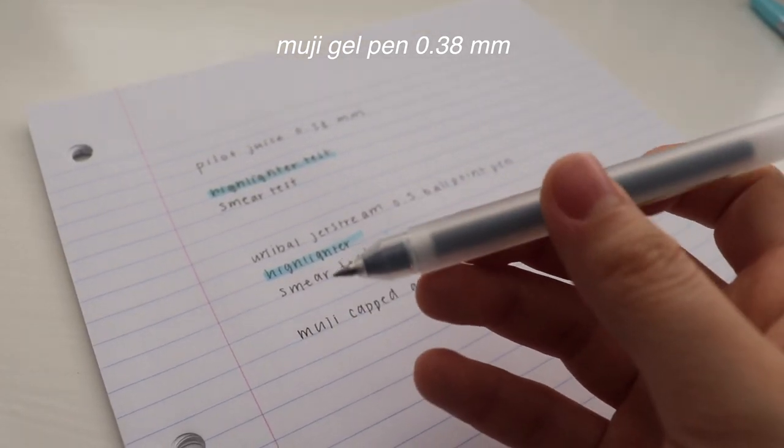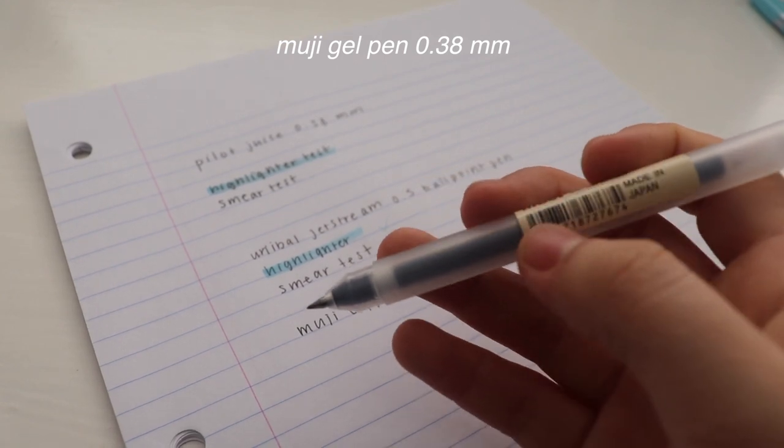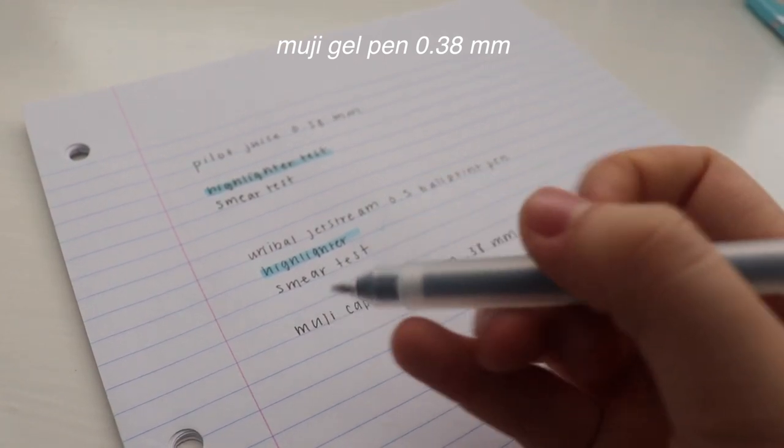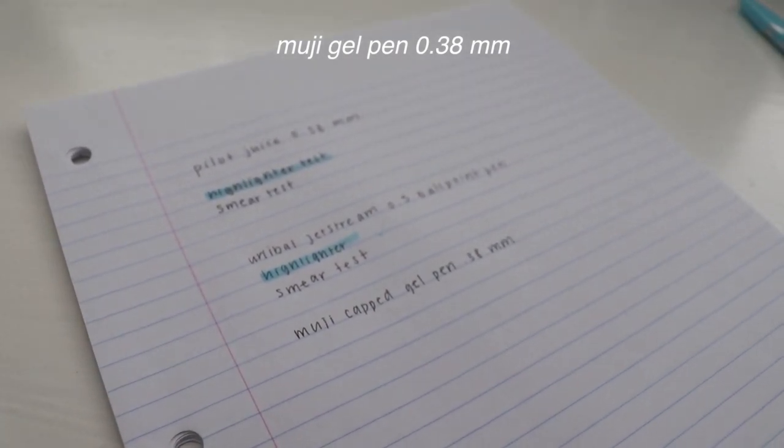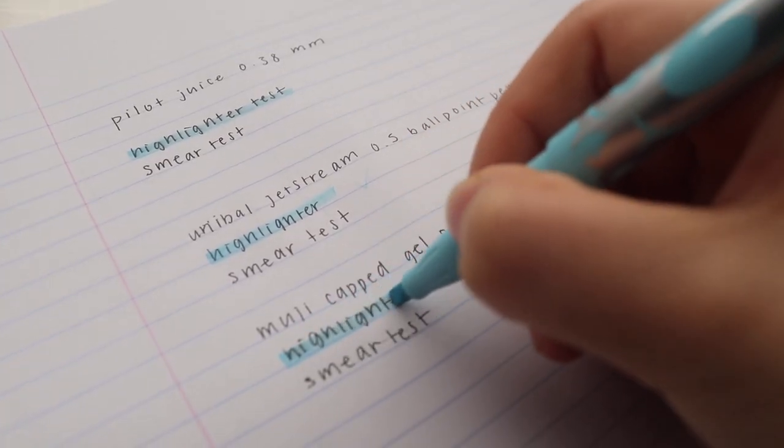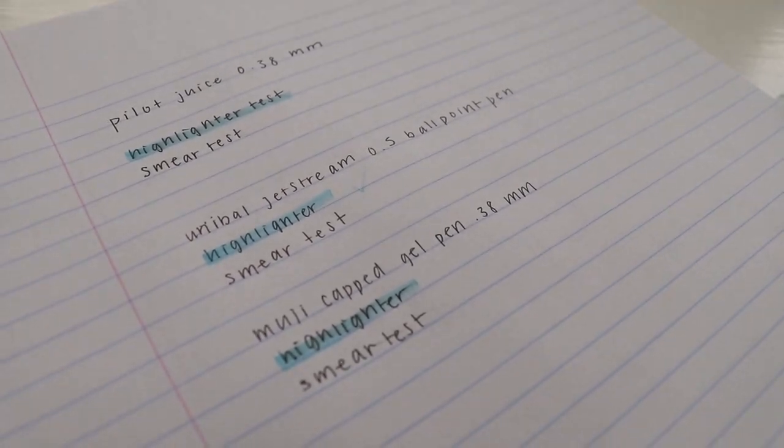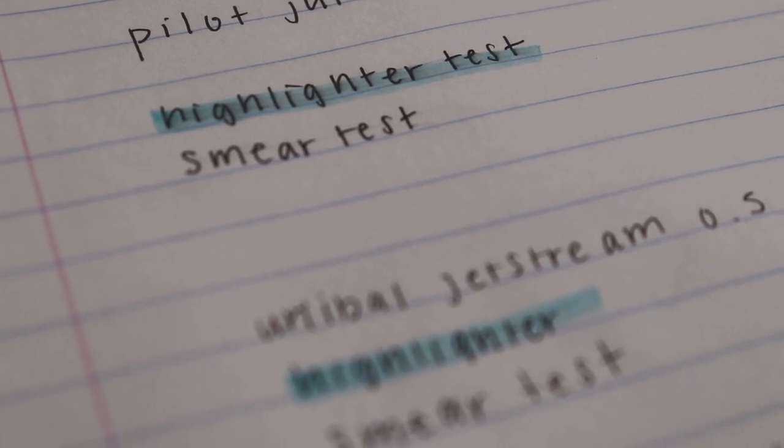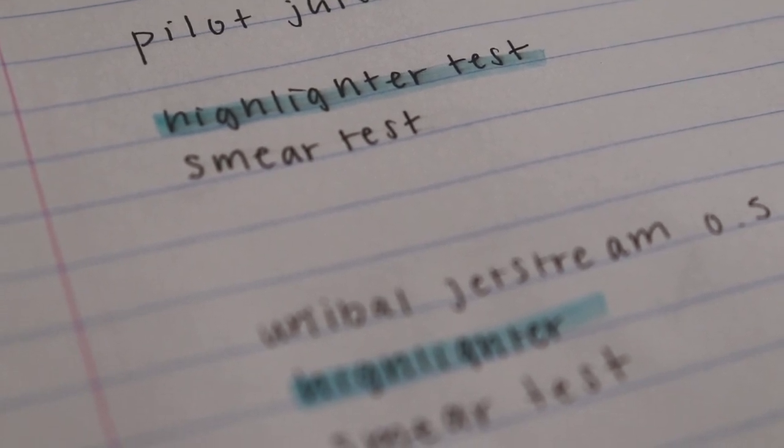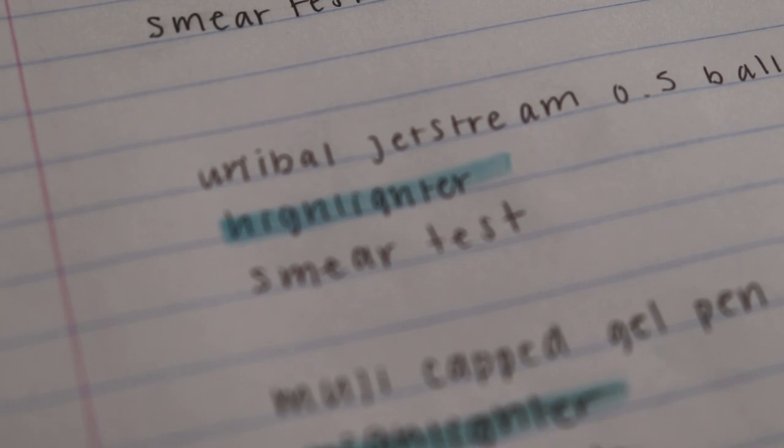It's nowhere near as smooth as the Juice or the Jetstream, however. Also, it's a bit awkward to write with since it has no grip. In terms of highlighting ability, it's pretty similar to the Juice in that it does smear a little bit. In fact, the Juice might actually smear a bit more. Neither of them are as good as the Jetstream, which doesn't smear at all.